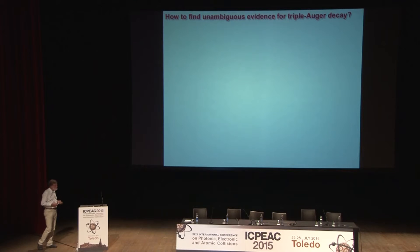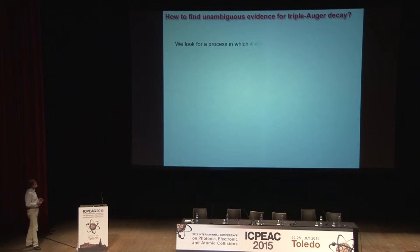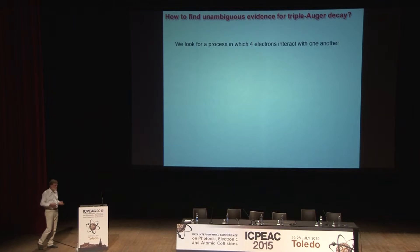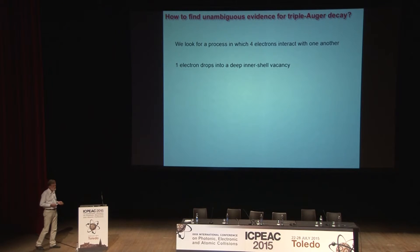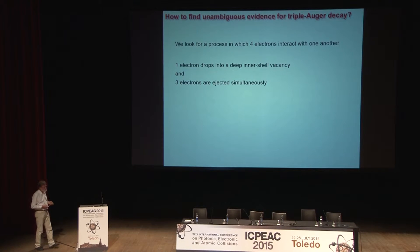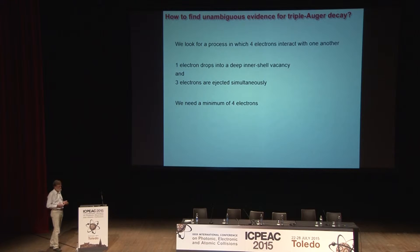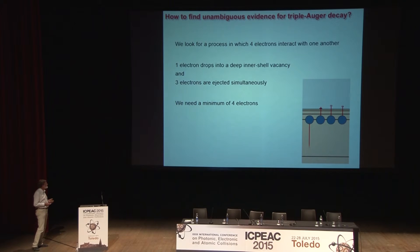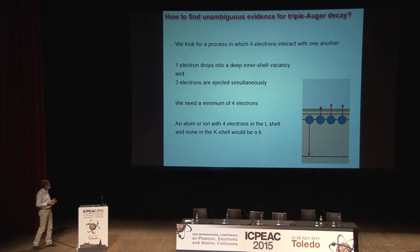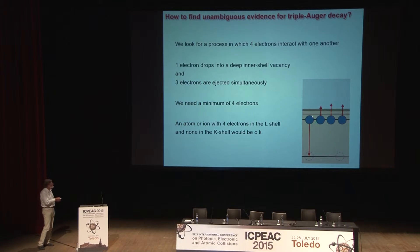How can we find an unambiguous case for triple Auger decay? We look for a process where four electrons interact with one another: one electron falls into an inner shell vacancy, and three other electrons are ejected simultaneously. That is the process we want to see. Clearly, we need a minimum of four electrons — four electrons in an L-shell and no electron in the K-shell. This state can decay by one electron falling down and three electrons going out simultaneously.